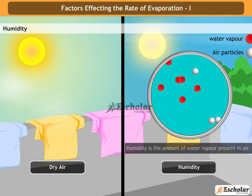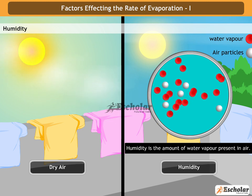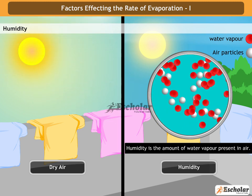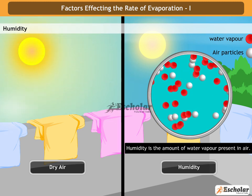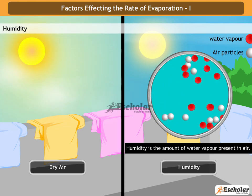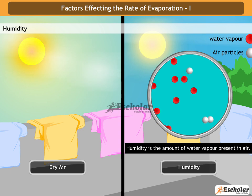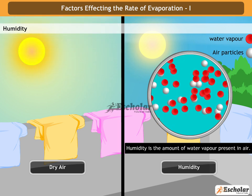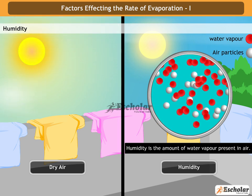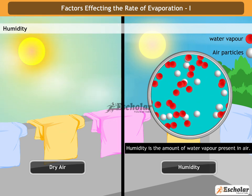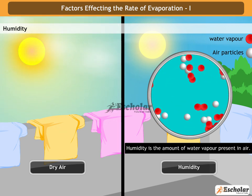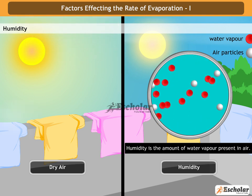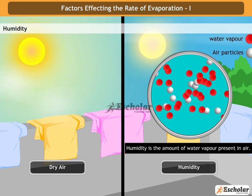Humidity is the amount of water vapors present in the air. Air can hold only a certain amount of water vapors at a particular temperature. Therefore, if the humidity is high, there is no space for more vapors.